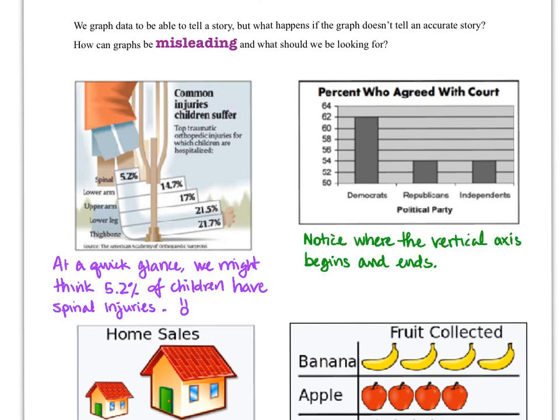All right, I don't know if you thought of the things that I've made a note of. But on the graph on the left, we see the cast graph. It's a pictograph. And if we look at it at a quick glance, it appears to us that 5.2% of children end up with spinal injuries. But that's not actually what this graph is saying. What it's actually saying is that top traumatic orthopedic injuries for which children are hospitalized. So that means we're looking only at orthopedic hospitalizations. Of the orthopedic hospitalizations, 5.2% of them are related to spinal injuries. So it's changing our denominator. It's not looking at all children or even all hospitalizations, but orthopedic hospitalizations. So very interesting. We have to read this one very carefully to really get the meaning behind it.